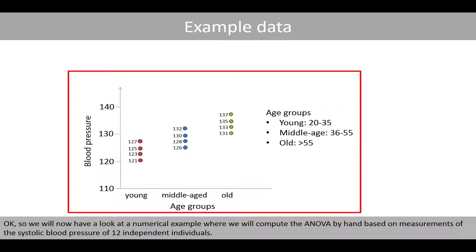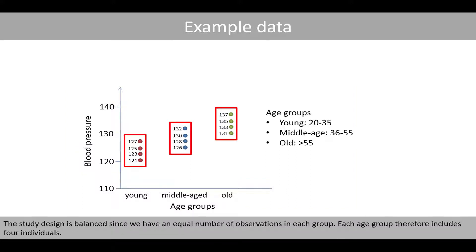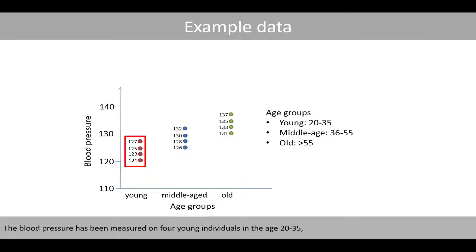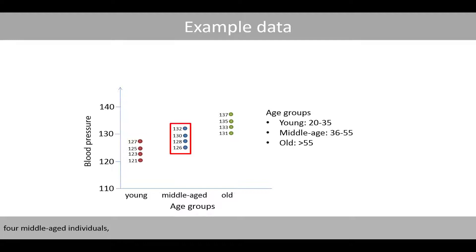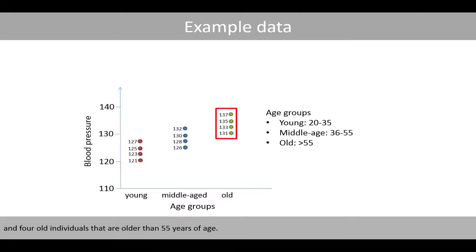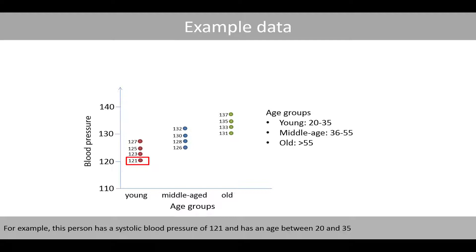We will now have a look at a numerical example where we will compute the ANOVA by hand, based on measurements of systolic blood pressure of twelve independent individuals. The study design is balanced since we have an equal number of observations in each group. Each age group includes four individuals: four young individuals in the age twenty to thirty-five, four middle-aged individuals, and four old individuals older than fifty-five years of age. For example, one person has a systolic blood pressure of 121 and has an age between twenty and thirty-five, whereas another data point represents a middle-aged person with a systolic blood pressure of 130.